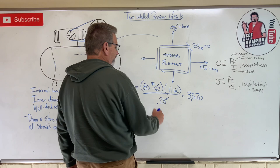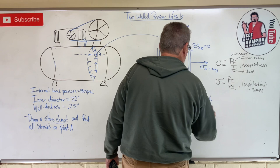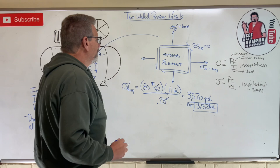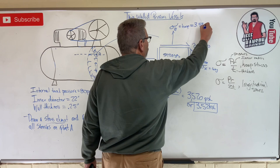Now what units is that? Because inches here and inches there cancelled out, and I'm left with psi. That's good stuff. Or 3.52 ksi. That's hoop stress that goes right here, 3.52 ksi.